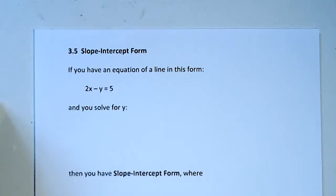This is Math 40, Elementary Algebra, Section 3.5. We've been studying lines and slopes, and now we're going to talk about a particular form of line called slope-intercept form.